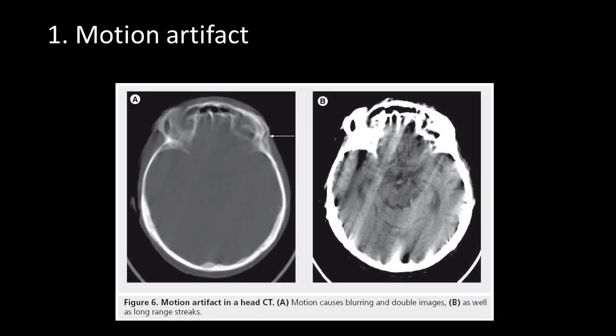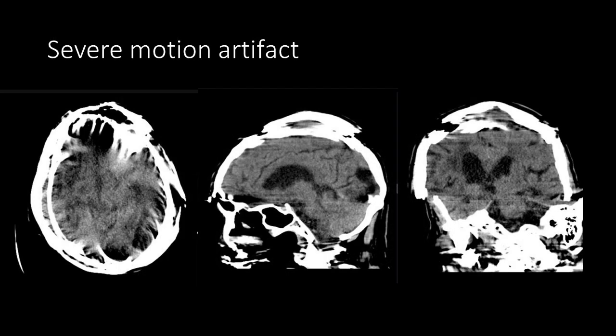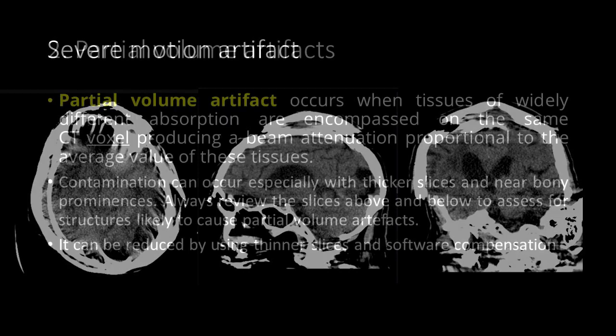This is an example of a motion artifact. In this image, the patient's movement causes blurring and double images. In a severe motion artifact, the violent movement causes the skull to appear as if it has been cut.